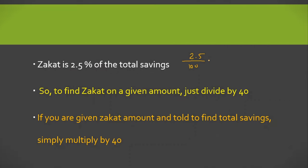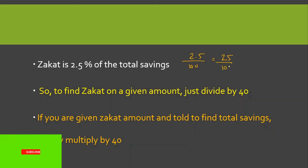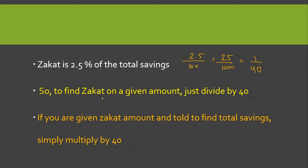2.5 divided by 100 — اگر میں denominator اور numerator کو 10 سے multiply کروں تو اس کو میں 25 divided by 1000 بھی لکھ سکتا ہوں۔ اگر آپ اس کو simplify کریں گے تو آپ کے پاس one by 40 آ جائے گا۔ کہنے کا مطلب یہ ہے کہ جب بھی آپ کو Zakat find کرنی ہو کسی بھی amount پہ، تو اس given amount کو آپ صرف 40 سے divide کر دیں۔